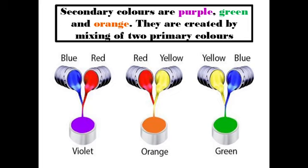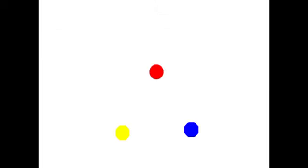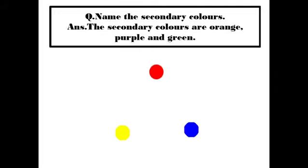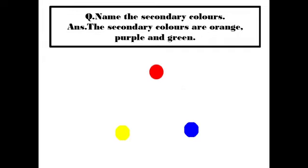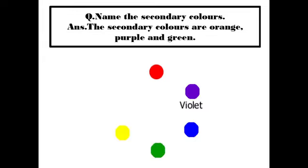Name the secondary colors — the secondary colors are orange, purple, and green. You can see on the screen: when we mix these primary colors, what we get are the secondary colors — orange, purple, and green.